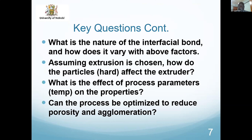Assuming extrusion is the production method, how does dealing with hard rock particles affect the extruder? We can't use a normal plastic extruder since it does not account for hard particles. What is the effect of process parameters such as temperature on properties? This is particularly important because plastic waste contains several plastics with different melting points — so what temperature do we choose for our process?